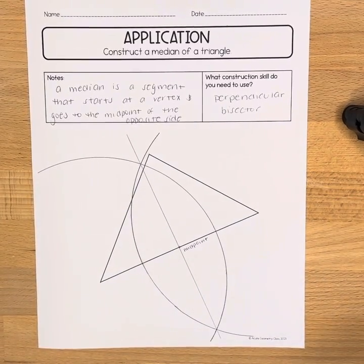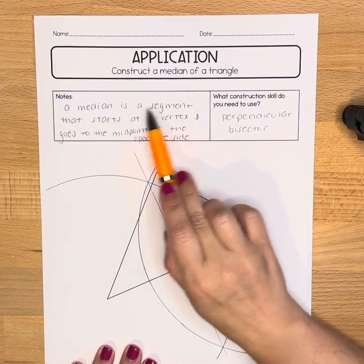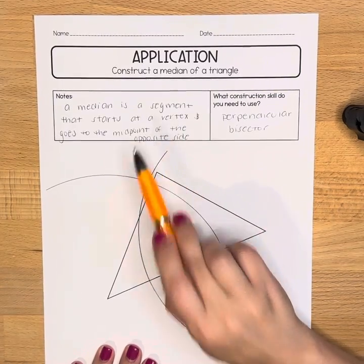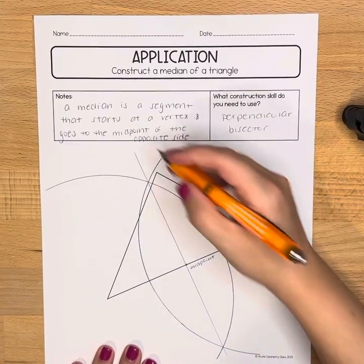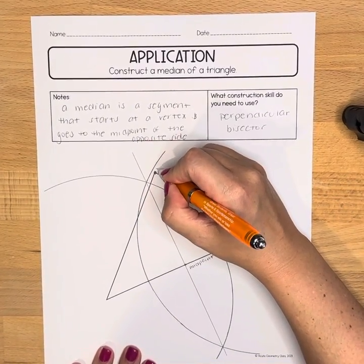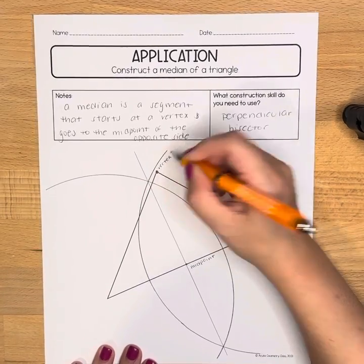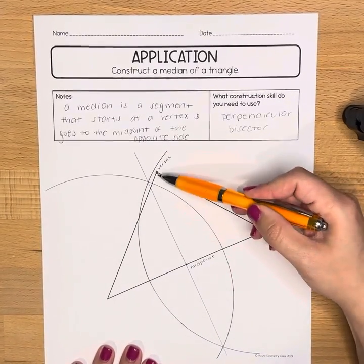But let's go back to the definition of median. It's a segment that starts out of vertex and goes to the midpoint of the opposite side. So I'm going to use this vertex up here because that's opposite the midpoint we found.